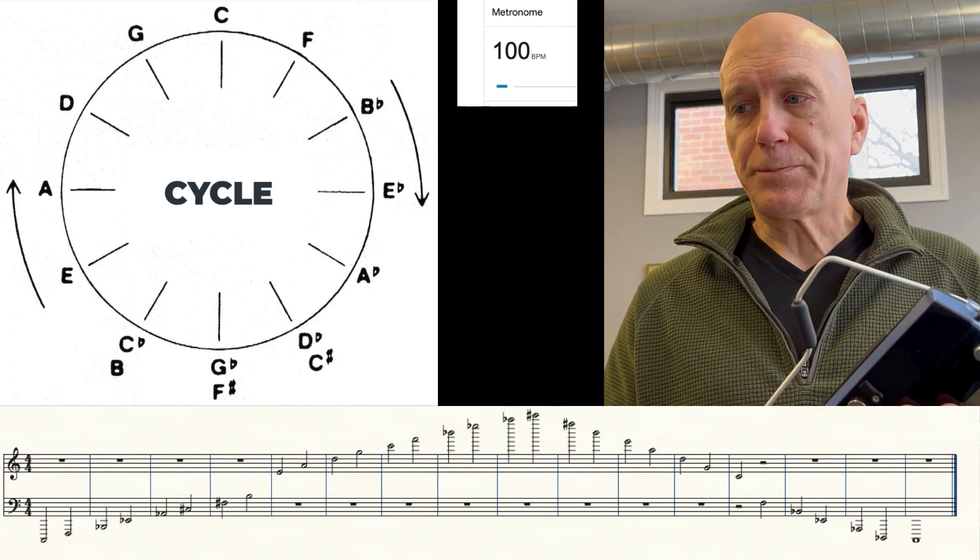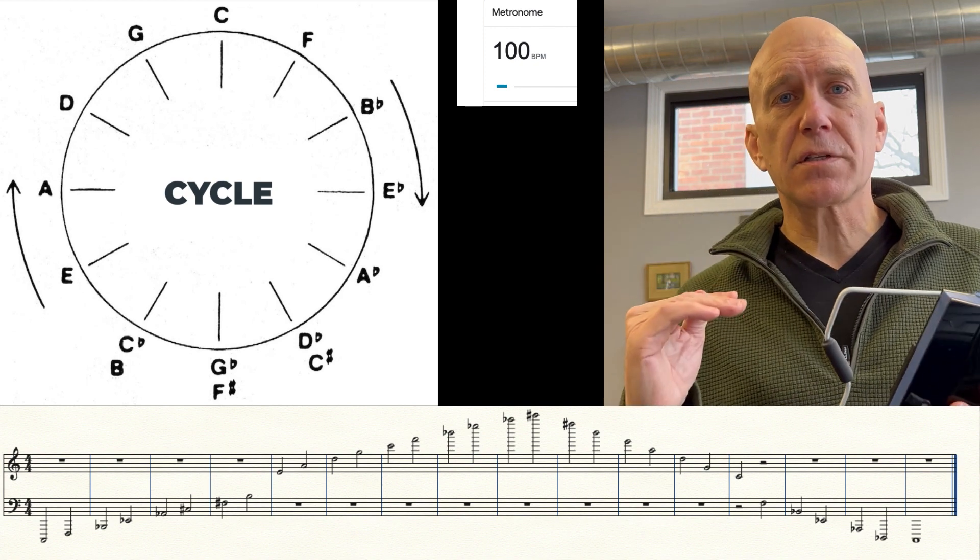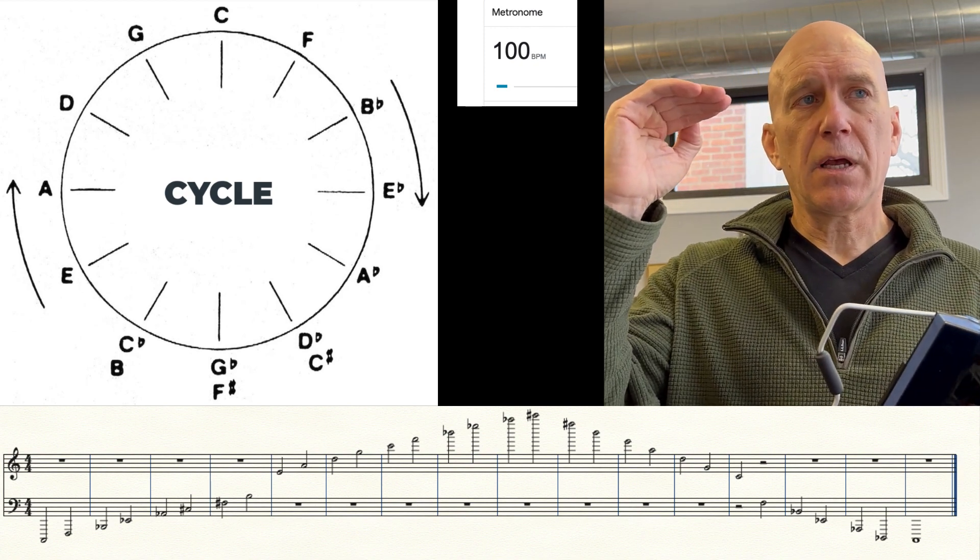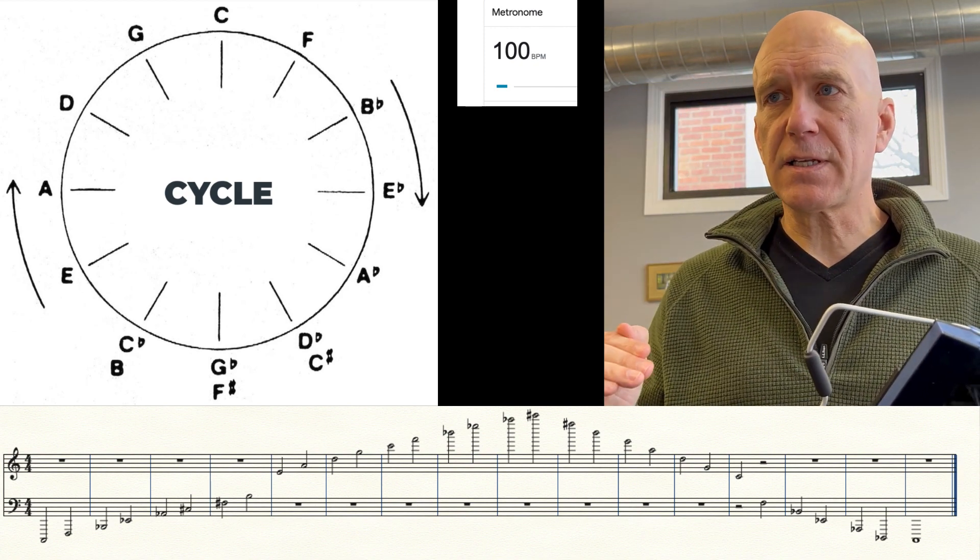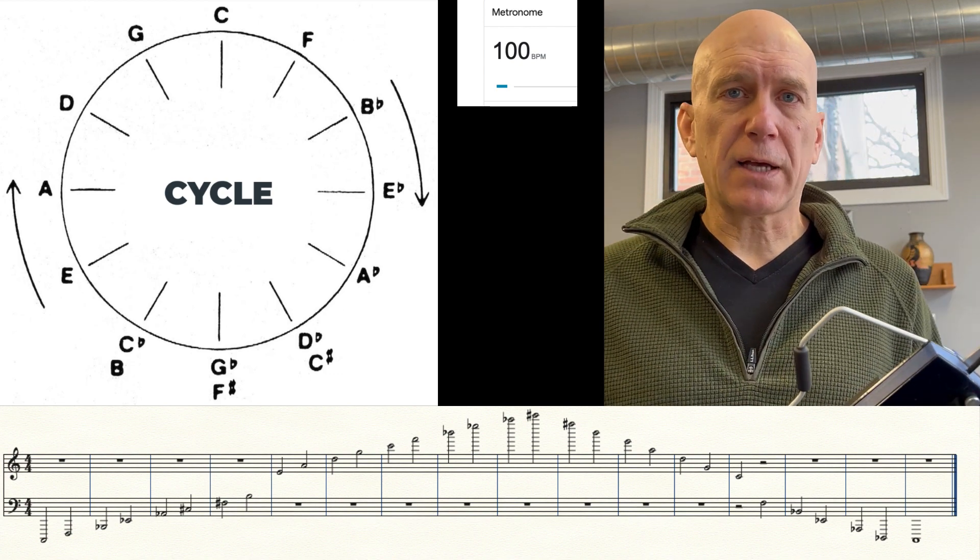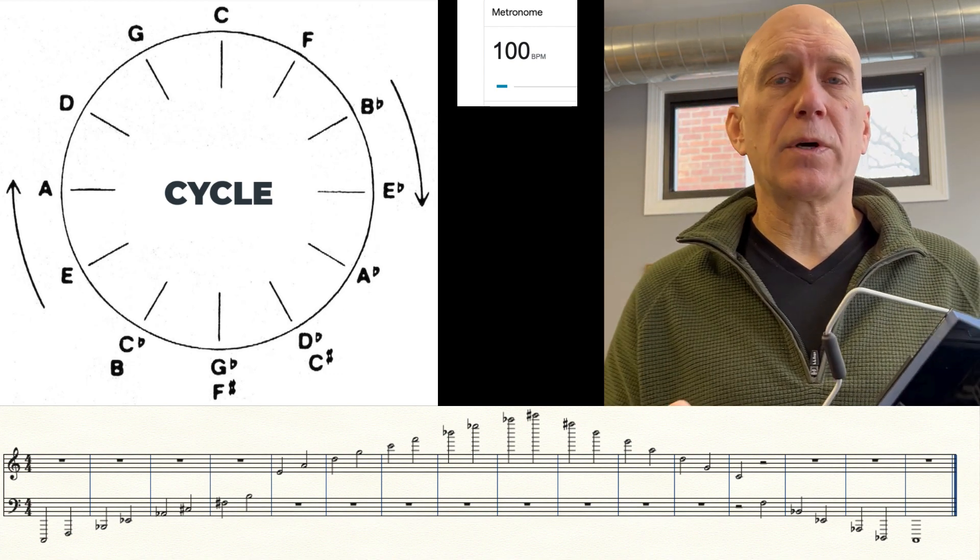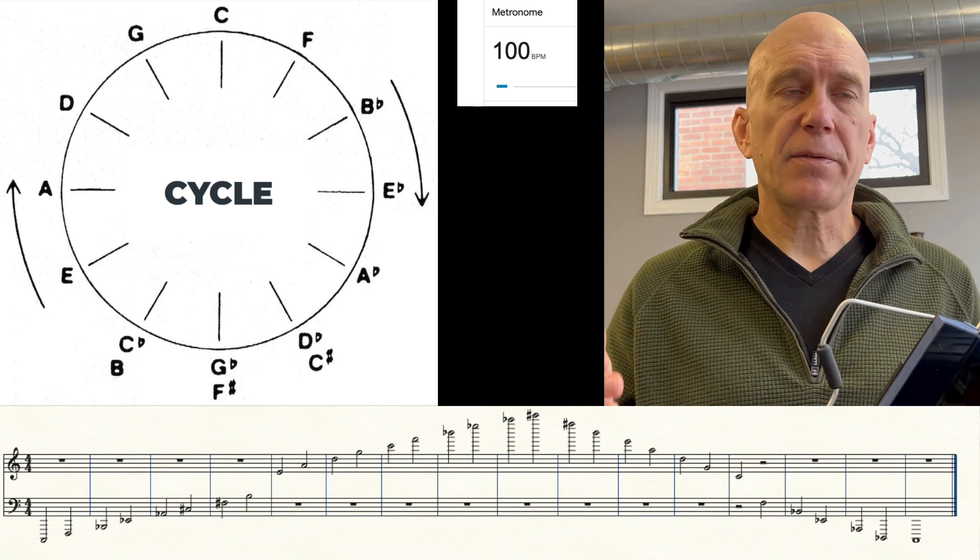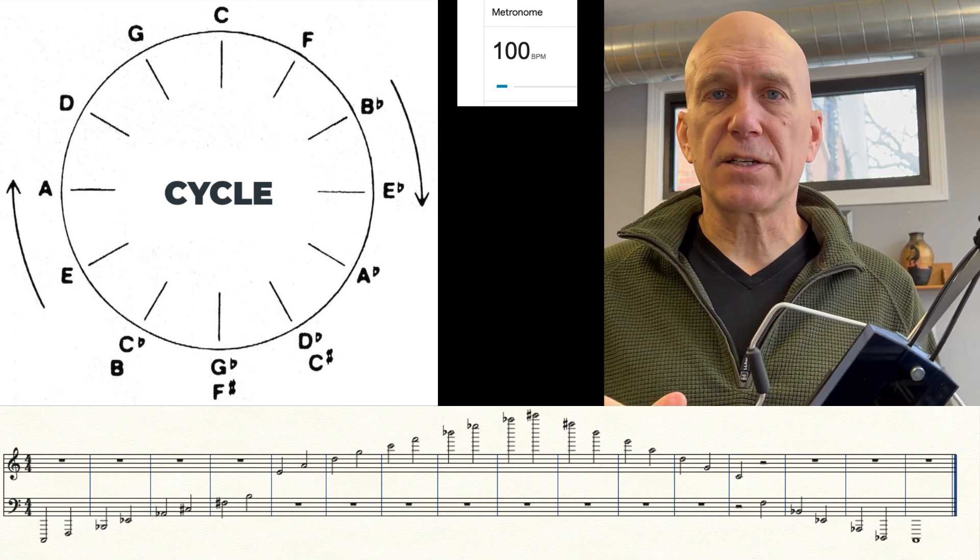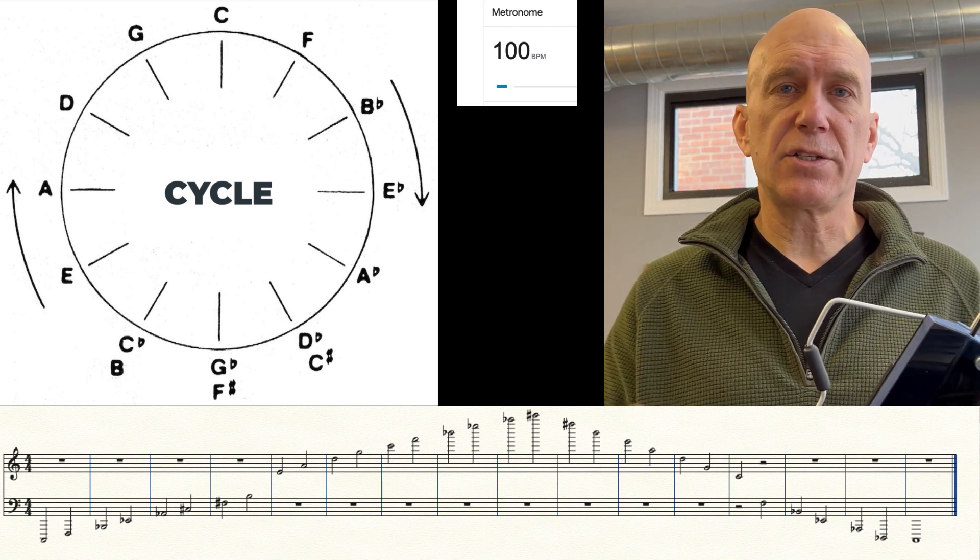So what I'm going to do is I'm just going to play fourths the whole way to the top of the instrument, and then I'll do perfect fifths descending from the top back down. So it's always the same sequence of notes. It'll be C, F, B flat, E flat, A flat, C sharp, F sharp, B, E, A, D, G, C.